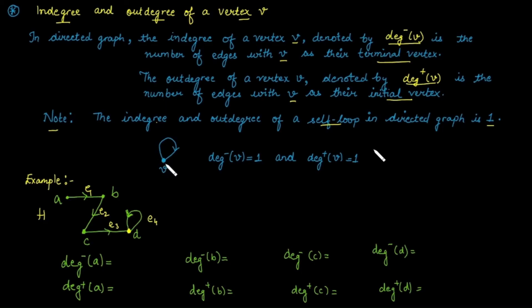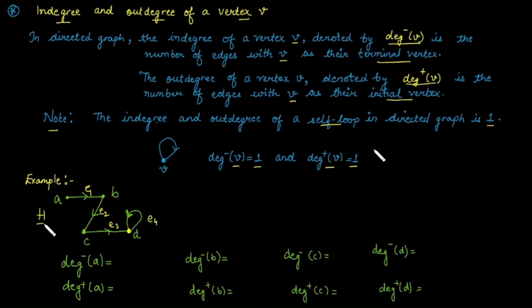If v is a vertex in graph G with a self-loop, the in-degree of vertex v equals one and the out-degree of vertex v is also one. Now, consider graph H with four vertices. We will calculate the in-degree and out-degree of each vertex.